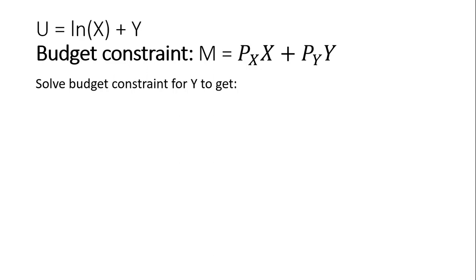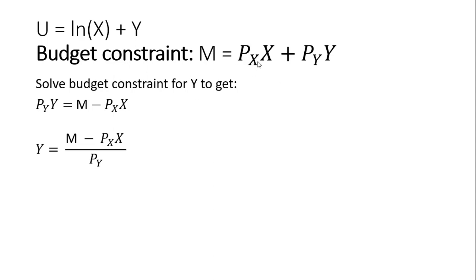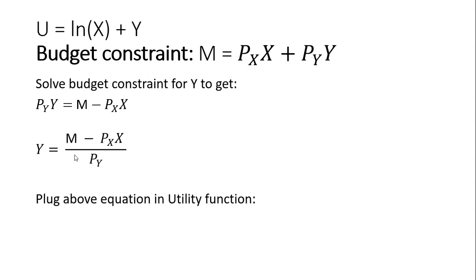I'm going to solve the budget constraint for y. So taking this budget constraint and solving it for y — subtracting the price of good x times x from both sides gives us this result. Then dividing through by the price of good y, I'm going to put this result into the utility function, substituting the above equation into the utility function.